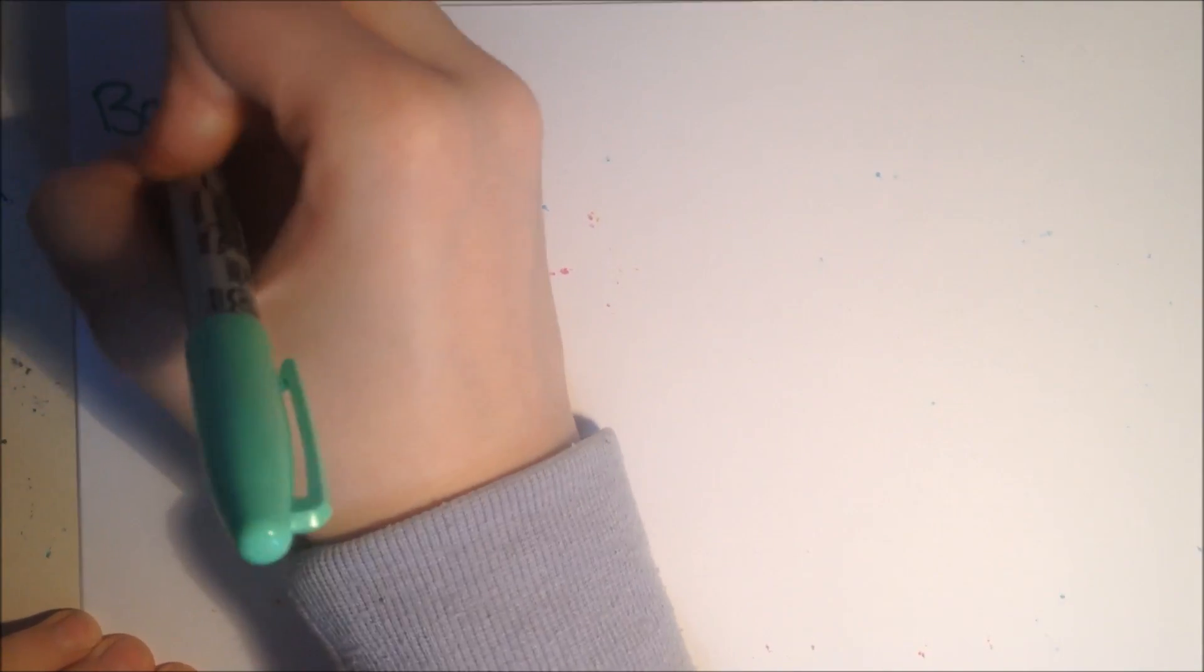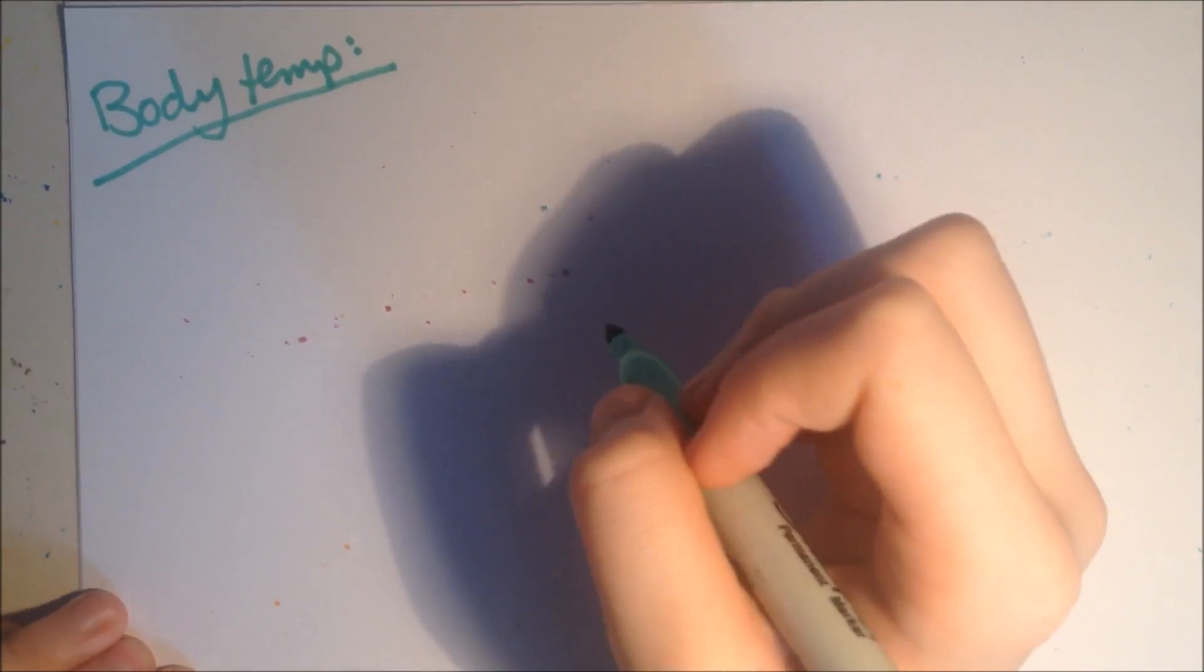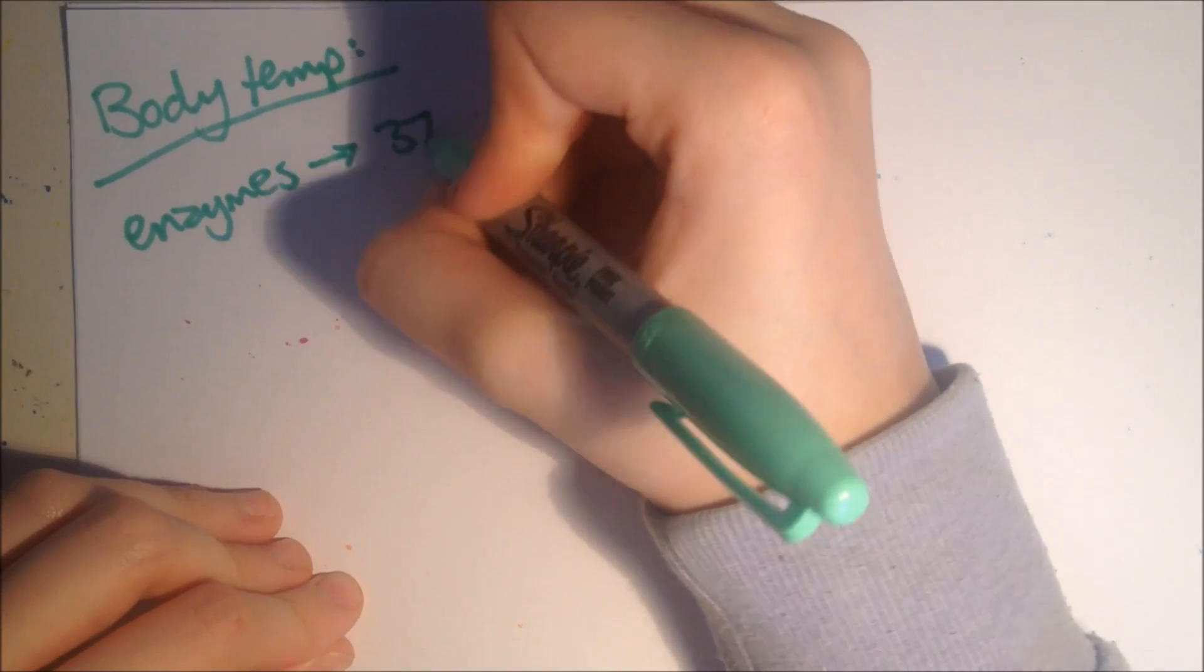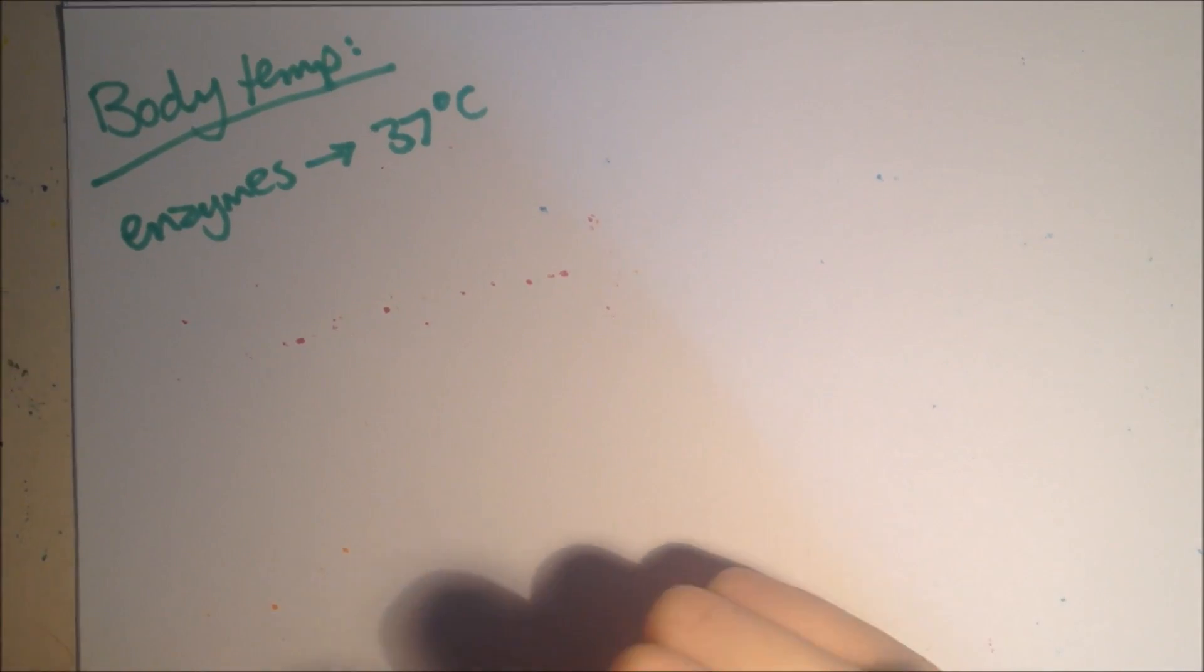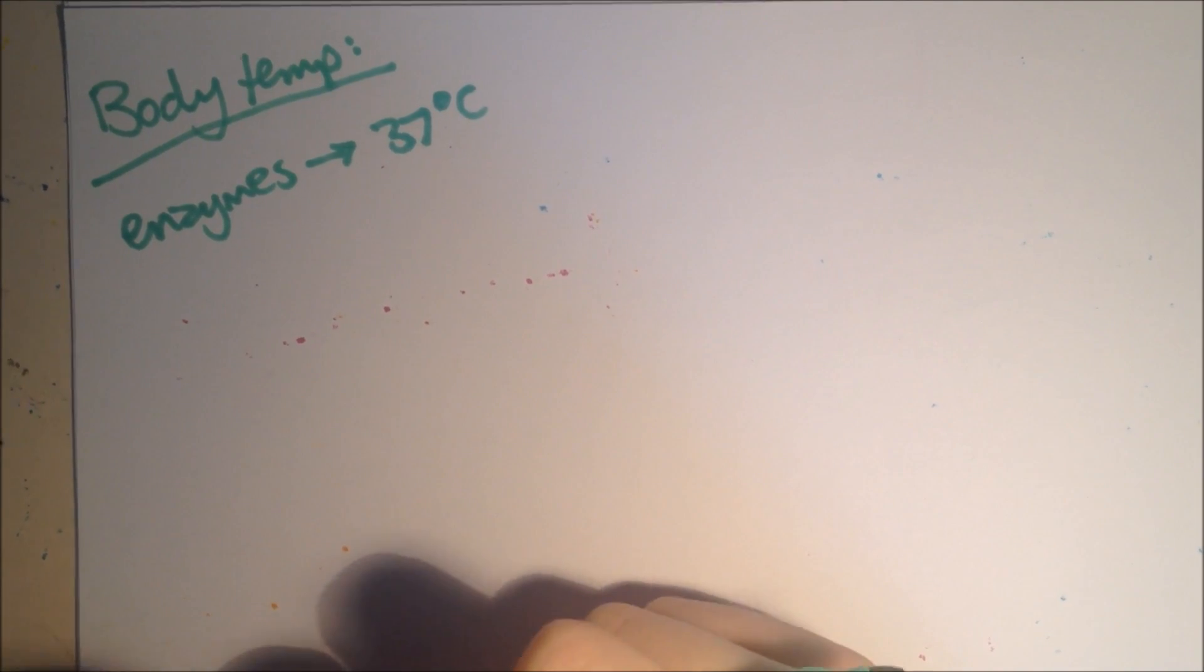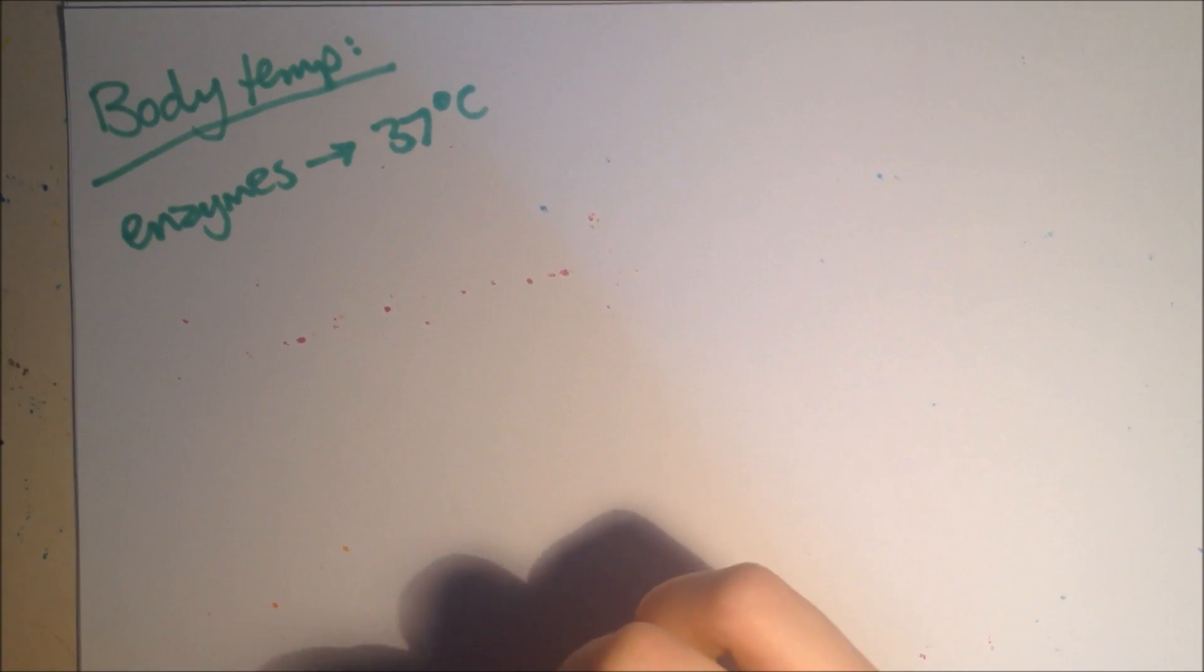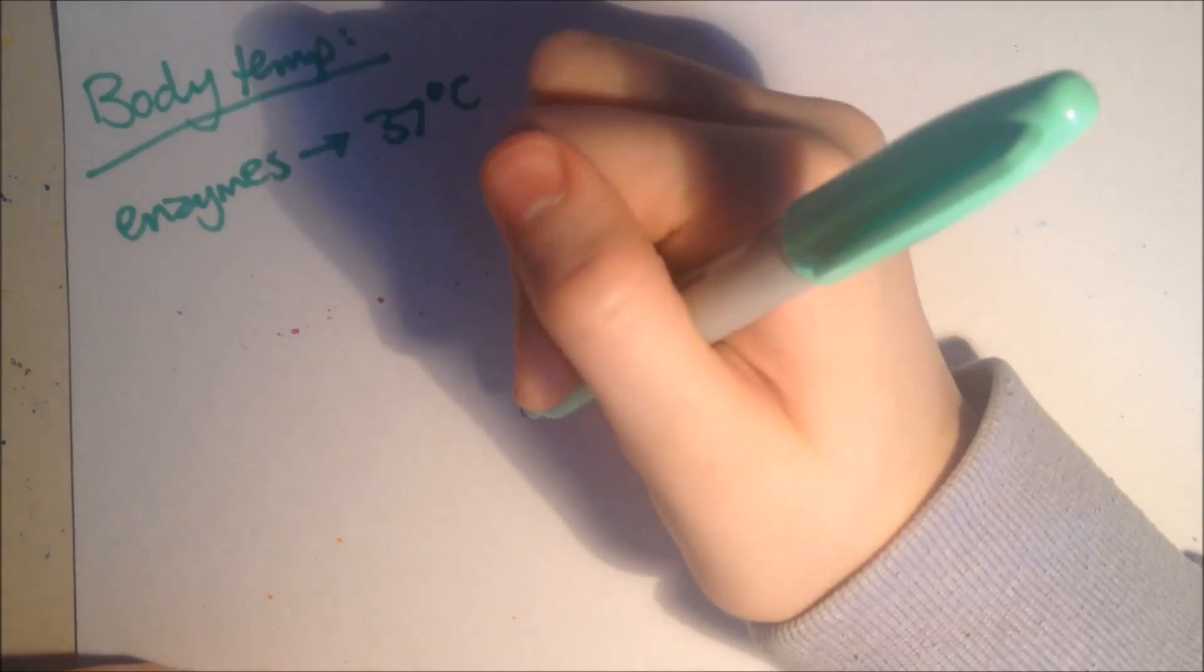Body temperature, is controlled by the brain. And it's about enzymes, and their optimum temperature, is 37 degrees Celsius. There's a thermoregulatory centre in the brain, which acts as your own thermostat. And, it contains receptors that are sensitive to the blood temperature in your brain. And the brain responds to information, to bring about change in the temperature, using the nervous and hormonal systems.